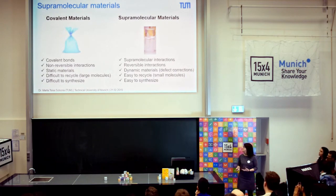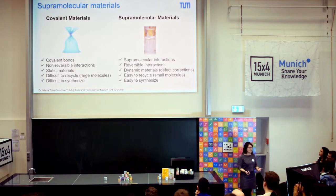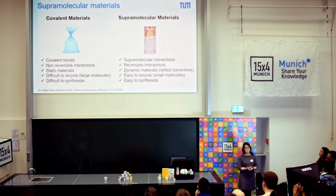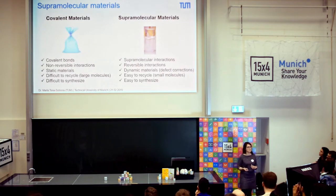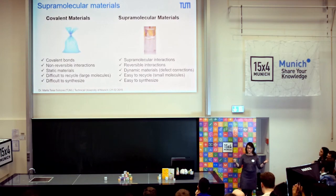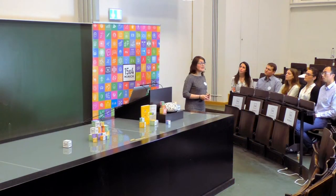Which properties are those? Basically, because they are made of reversible interactions, they are considered dynamic and they can do fancy things like defect correction. Because they are made out of small molecules, they are also easier to recycle. Imagine one of these materials ends up in our body — if it is made out of simple, small molecules, it is going to be easier for our body to recycle and digest than if we inject a huge molecule. And because of the same reason, they are also easy to synthesize, which is also better economically.